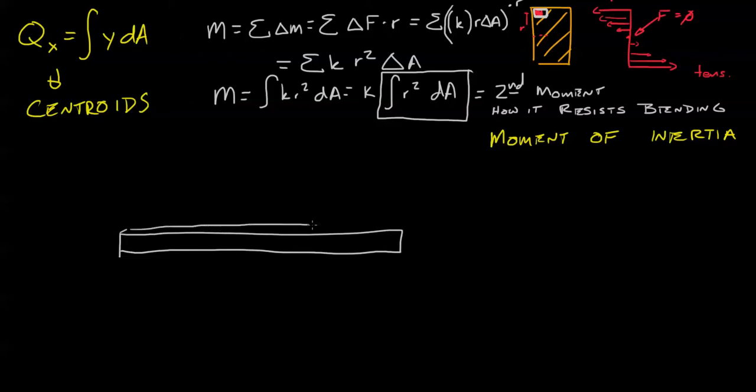It's 3D and it looks something like this. And let's say we want to know, if we wanted to put our finger on it, where we would be able to balance it. We want to balance it.